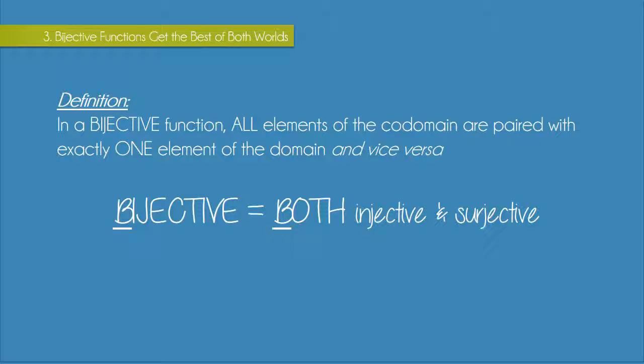This gives us a combined definition for bijectivity. In a bijective function, all elements of the codomain are paired with exactly one element of the domain and vice versa. The all and the one are key words in this definition, so you can't leave them out. The most important thing to remember though is that if a function is to be bijective, it needs to be both injective and surjective.